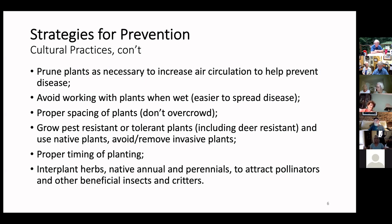This is a really important one — it could be a biological control but we've included it under cultural: interplanting herbs, natives, annuals and perennials to attract pollinators and other beneficial insects and critters. Very important. Throughout your property, and also in your vegetable garden — actually make room in your vegetable garden for such things, because they will attract beneficials that will help you fight against problems in your garden.